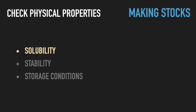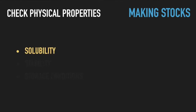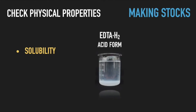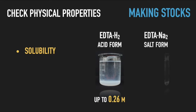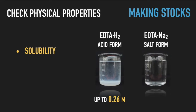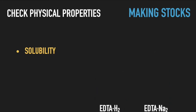Solubility of a substance strongly varies for different solvents. For example, solubility of the acid form of the common polyvalent ion chelator EDTA in water does not exceed 0.26 molar, and you cannot prepare a 0.5 molar stock of EDTA unless you transform it into a salt form by titration with a concentrated alkali.